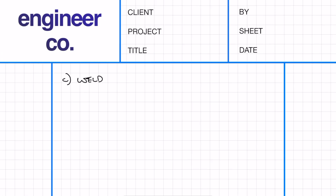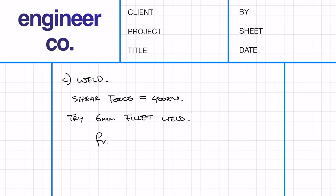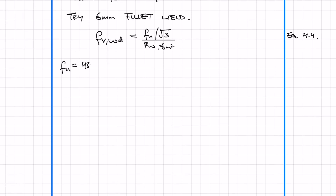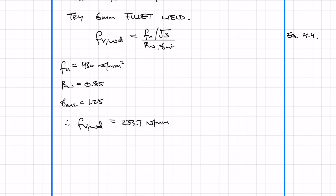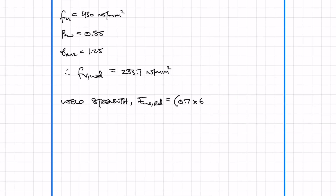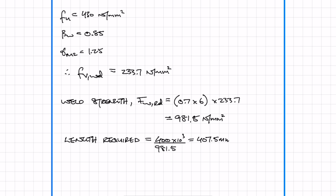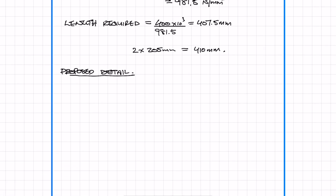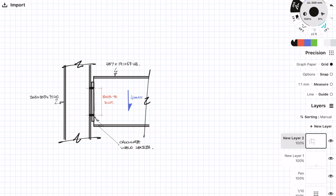Now moving on to calculating the weld for the end plate connection. We're going to try a 6mm fillet weld and calculate the weld strength using the same values as from the previous example. We simply plug in the numbers to get the design shear strength. The weld strength is the shear strength multiplied by the throat thickness, where the throat thickness is the leg length multiplied by 0.7. Dividing the design force by the weld strength gives a required weld length of 407.5mm. Because we provide the weld on both sides of the web, we can provide a depth of 205mm which will still give us an adequate weld length.